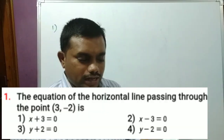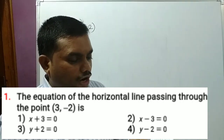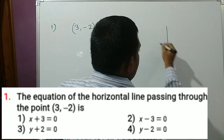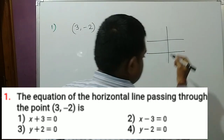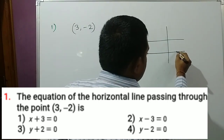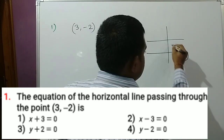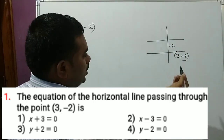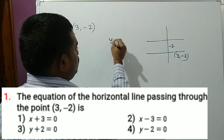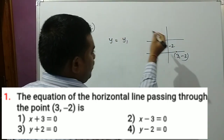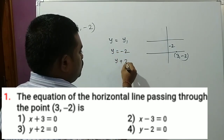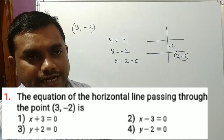These are the synopsis. Now we go to the questions. Question 1: The equation of the horizontal line passing through the point (3, minus 2). A horizontal line means parallel to the x-axis. The point is (3, minus 2), so the distance is minus 2 units. Using the formula y equals y1, here y1 is minus 2, so y equals minus 2, which gives y plus 2 equals 0. Option 3 is the correct answer.